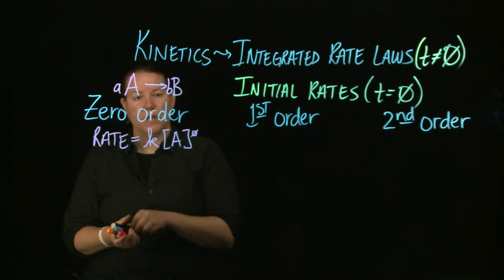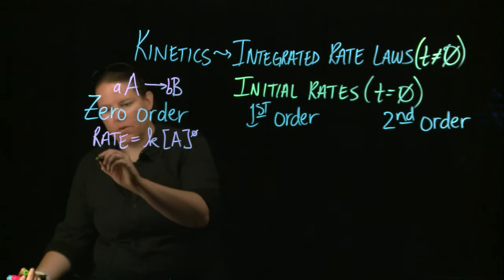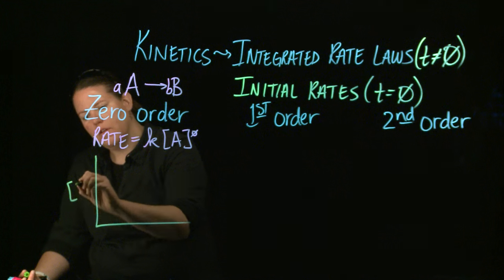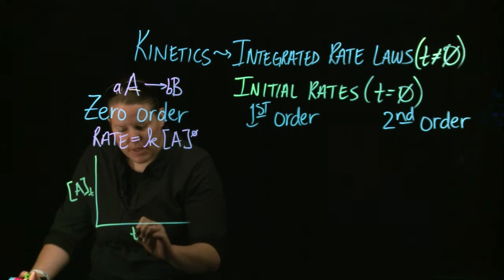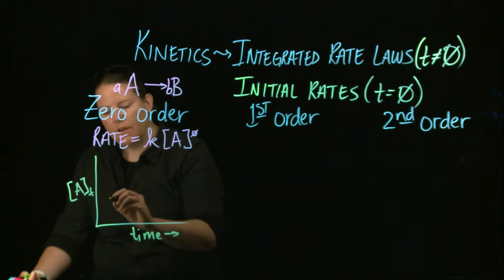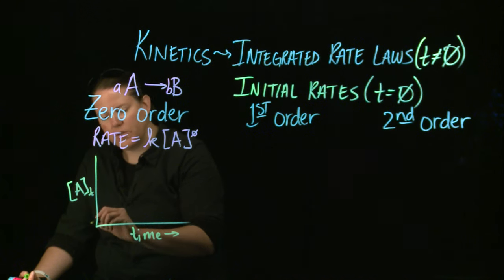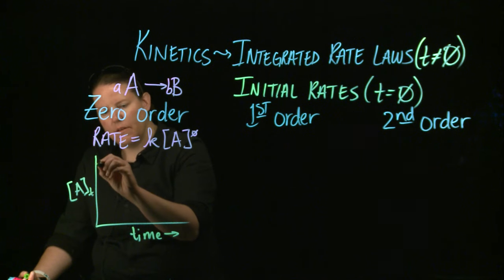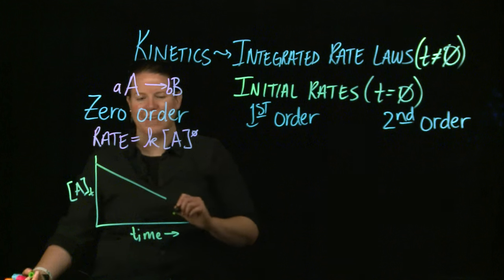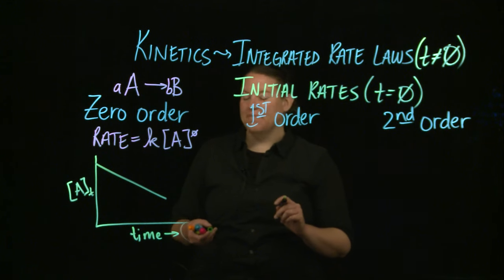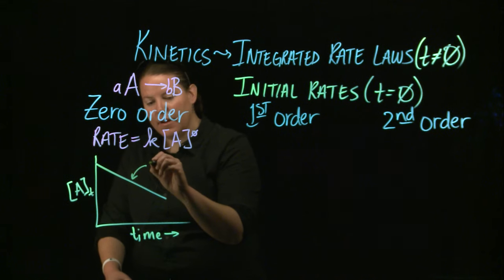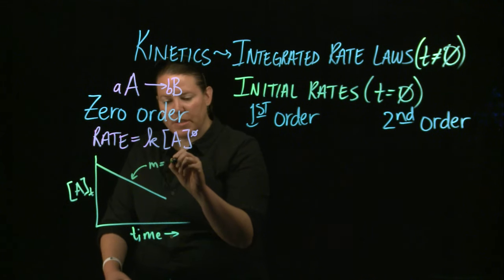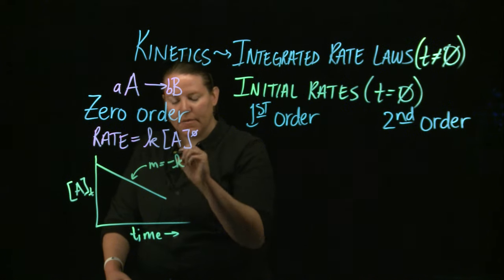So in terms of that, when we graph it, if we did multiple experiments over and over and over again at varying concentrations of A over time, and this would be versus time, right, then what I'd get is I'd get a nice straight line, not starting at the origin, that would look like that. In terms of this, we know the slope is equal to negative K.